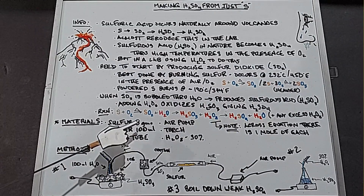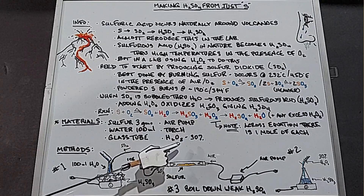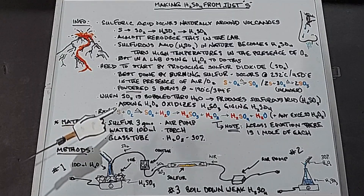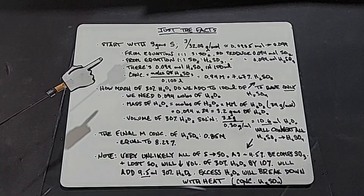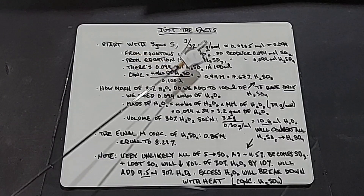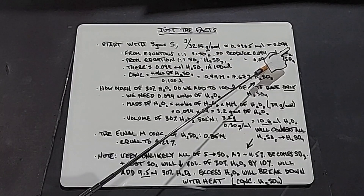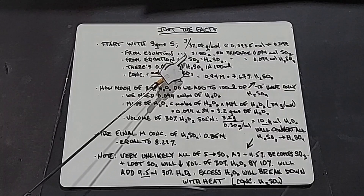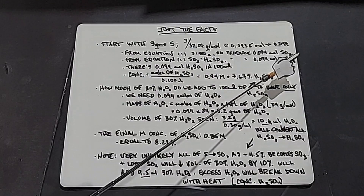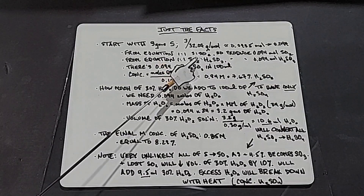Materials needed: 3 grams sulfur, 100 mL water, a glass tube, an air pump, a torch, and 30% hydrogen peroxide. For stoichiometry: starting with 3 grams of sulfur, dividing by its molar mass gives 0.094 moles of sulfur. In the equation everything is one-to-one, so 0.094 moles of sulfur will produce 0.094 moles of sulfur dioxide, which will in turn produce 0.094 moles of sulfurous acid.